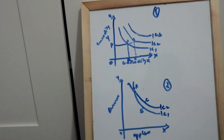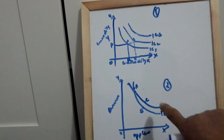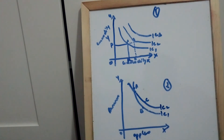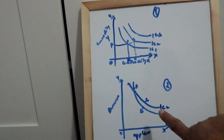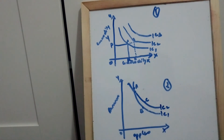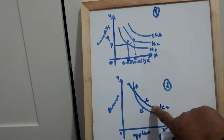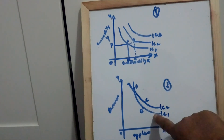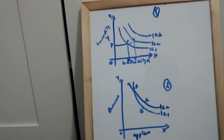So points B and C should also give the same level of satisfaction. However, this is not possible, as B and C lie on two different indifference curves. Therefore, two indifference curves cannot intersect each other.